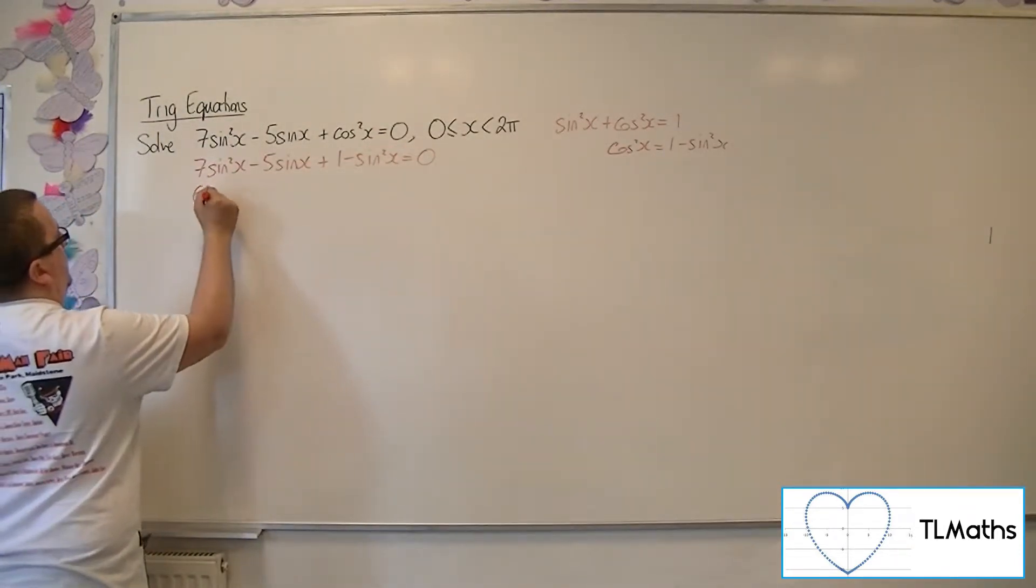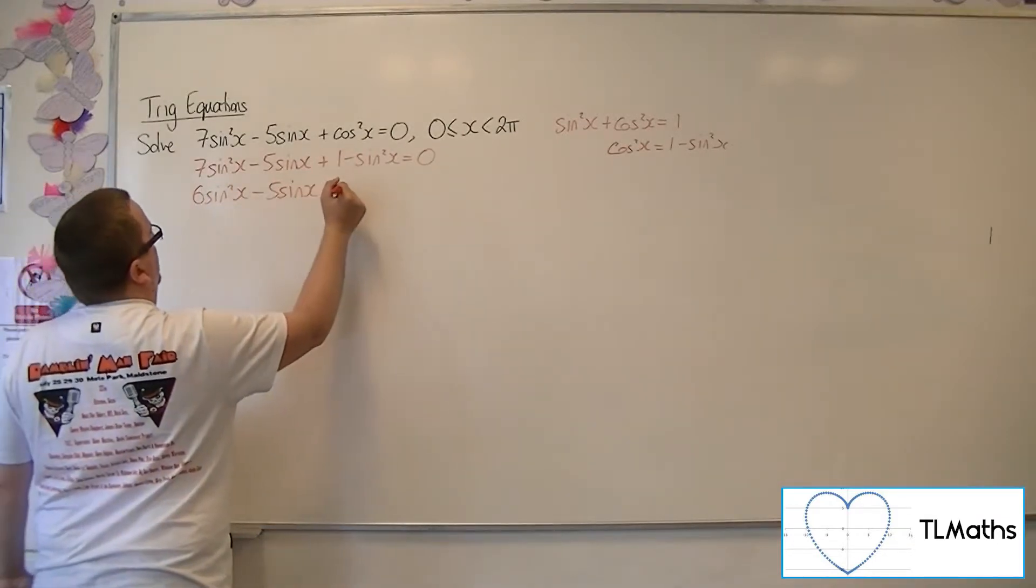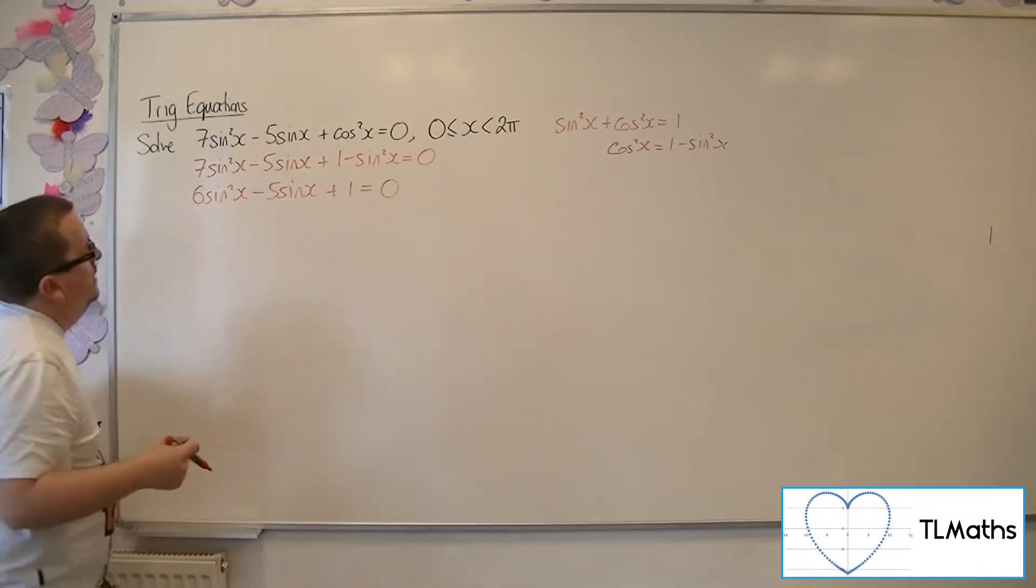Subtracting the sin²x there gives 6sin²x - 5sinx + 1 = 0.